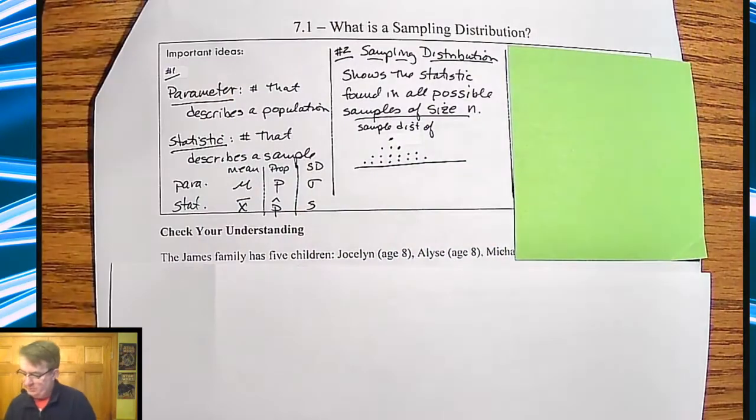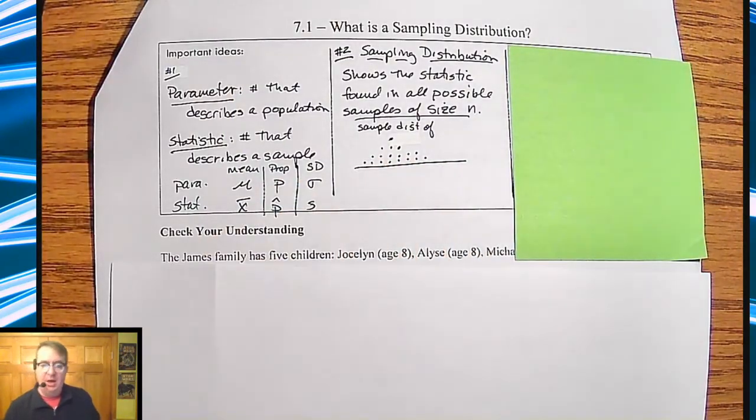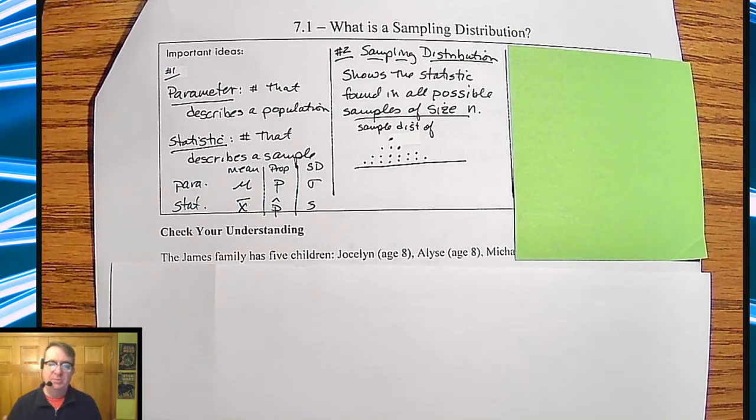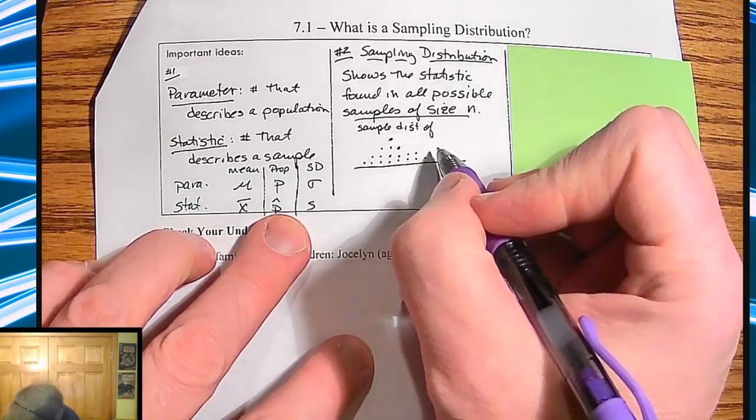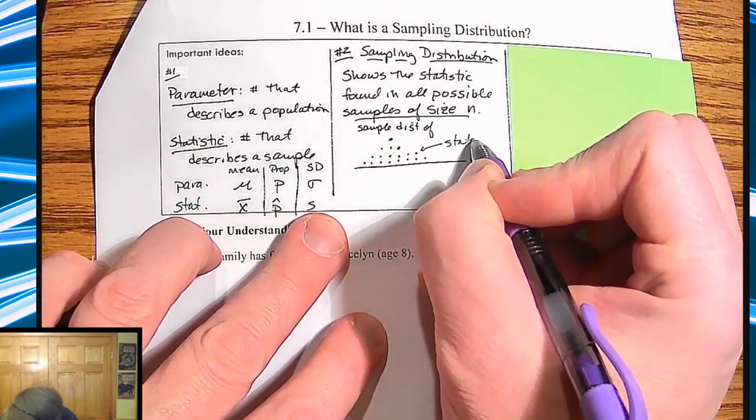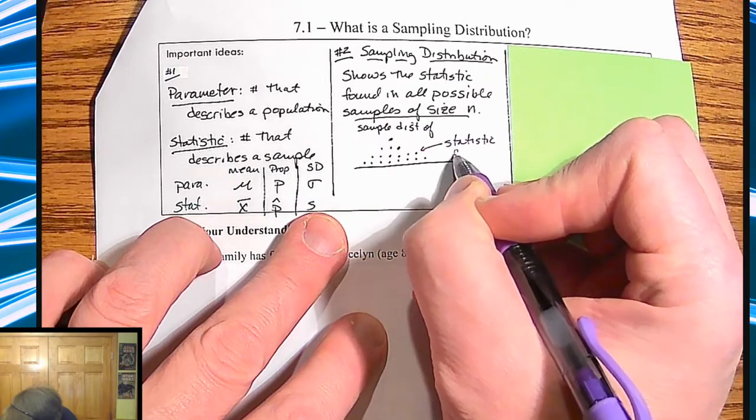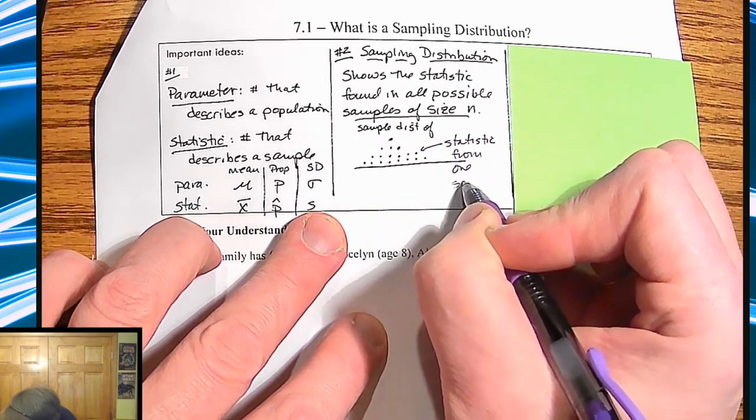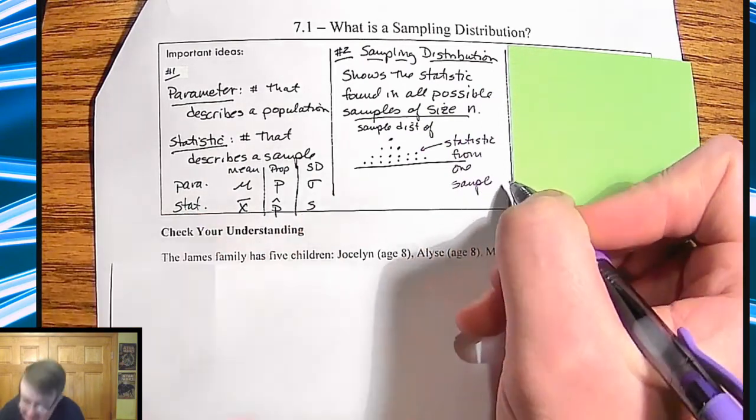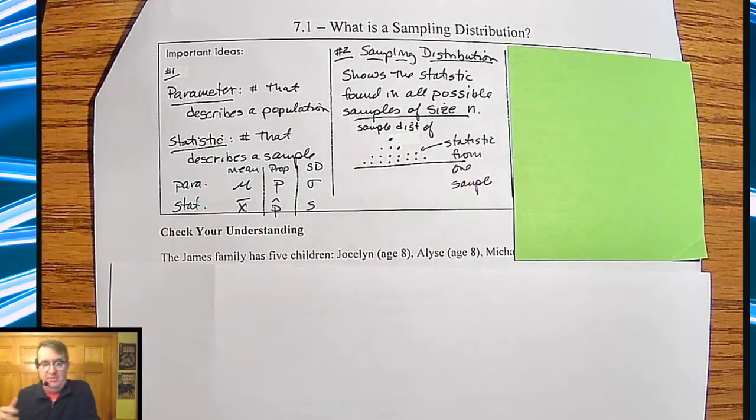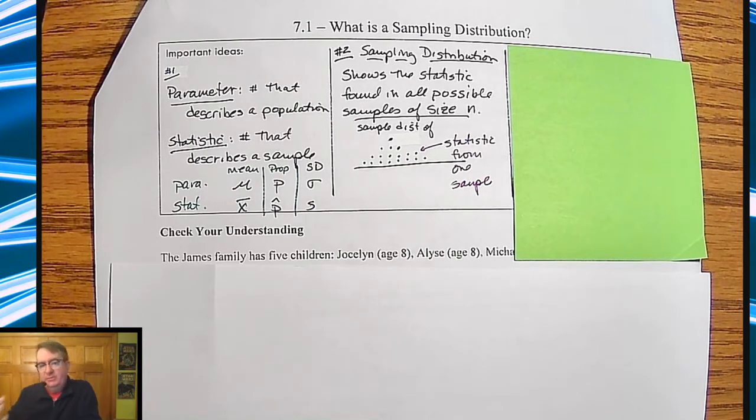For part two to worry about, sampling distributions, it shows the statistic found in all possible sample sizes of n. So what will end up happening here is you're going to go through and you make out a dot plot there. And then again, remember each one of these here is going to be a statistic from one sample. Now, what we're talking about today, for those of you guys who are worrying about what happens if we can't find all the different possible samples, we're going to go there. We're starting simple. We'll build off that.